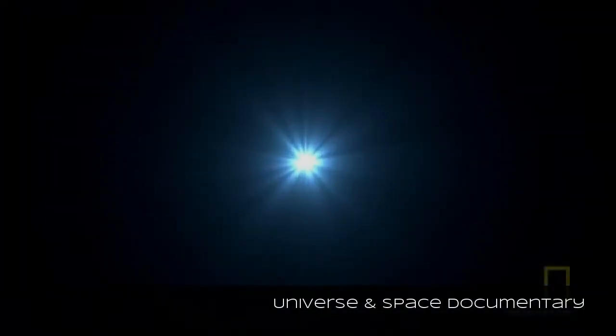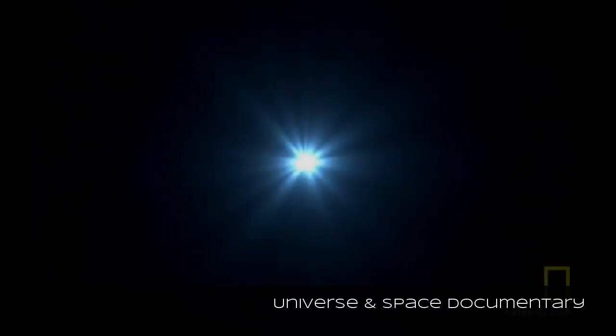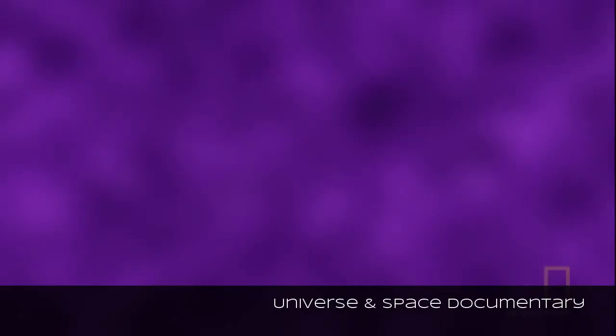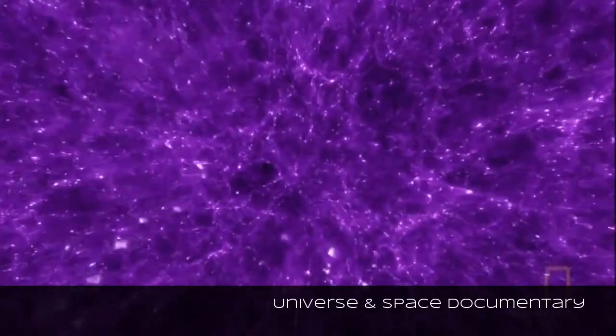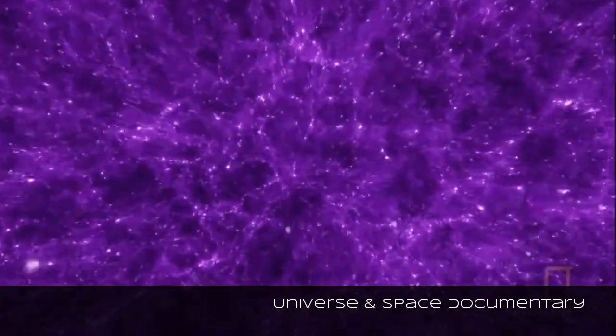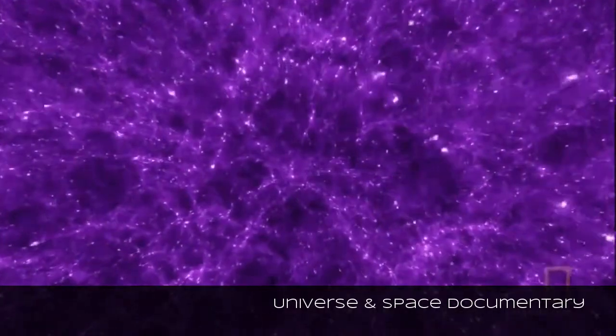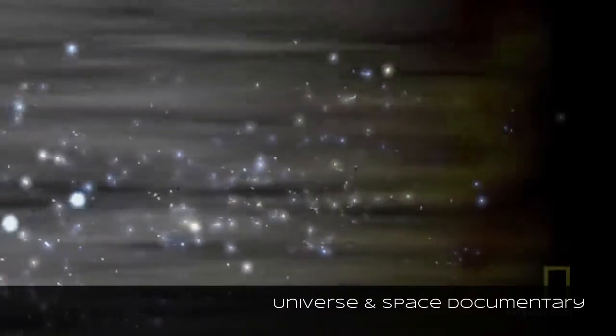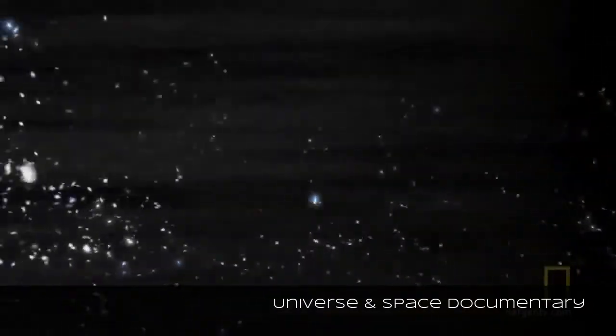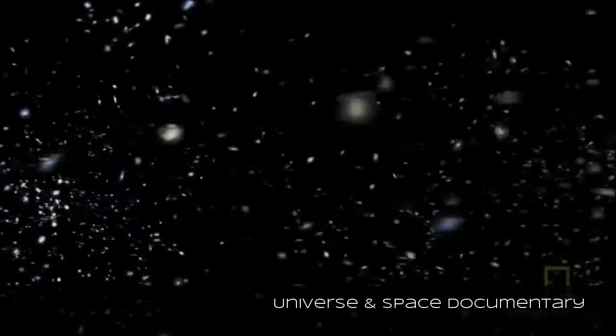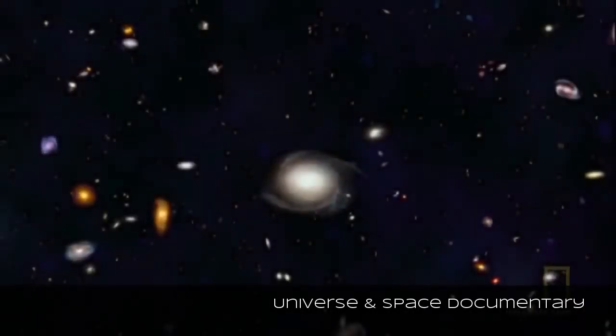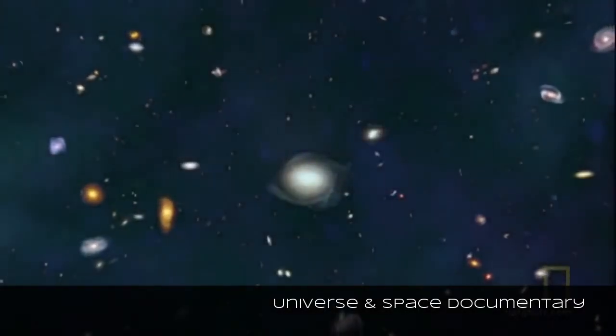In this scenario, the universe could return to its original state just before the Big Bang, setting the stage for a perpetual seesaw of creation and destruction. The Big Crunch theory moved to a scientific backburner. Cosmologists figured out that there must be some form of energy that keeps the universe from collapsing.